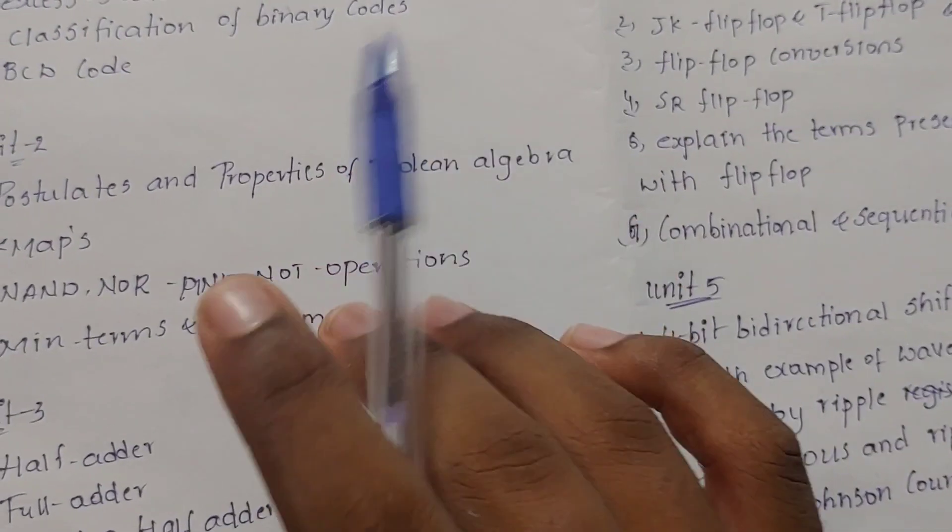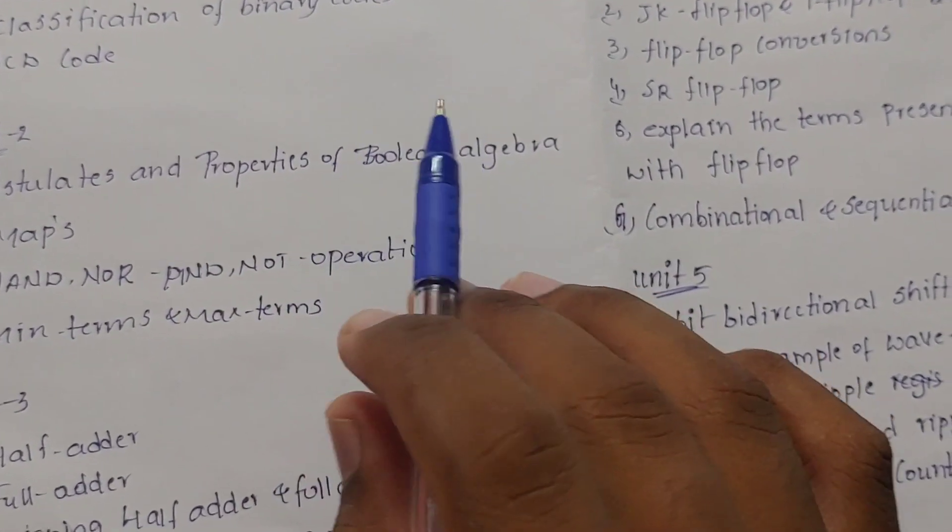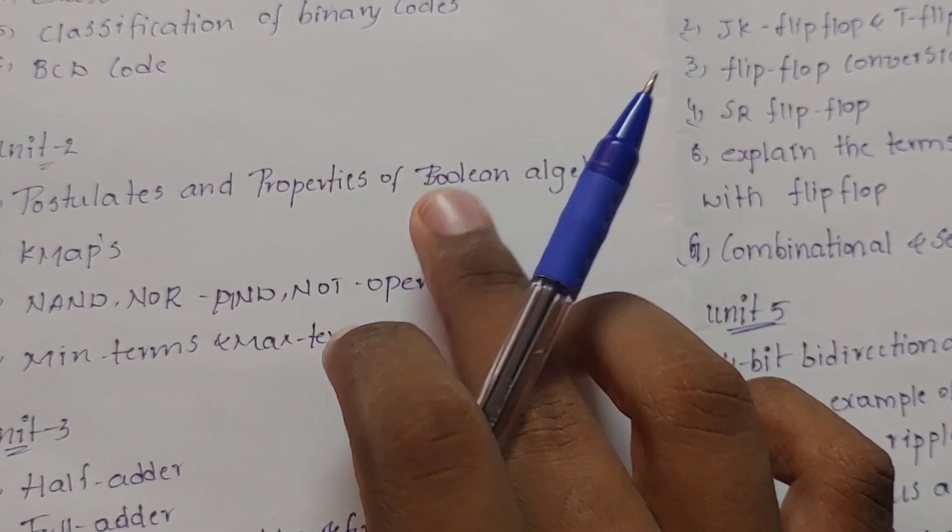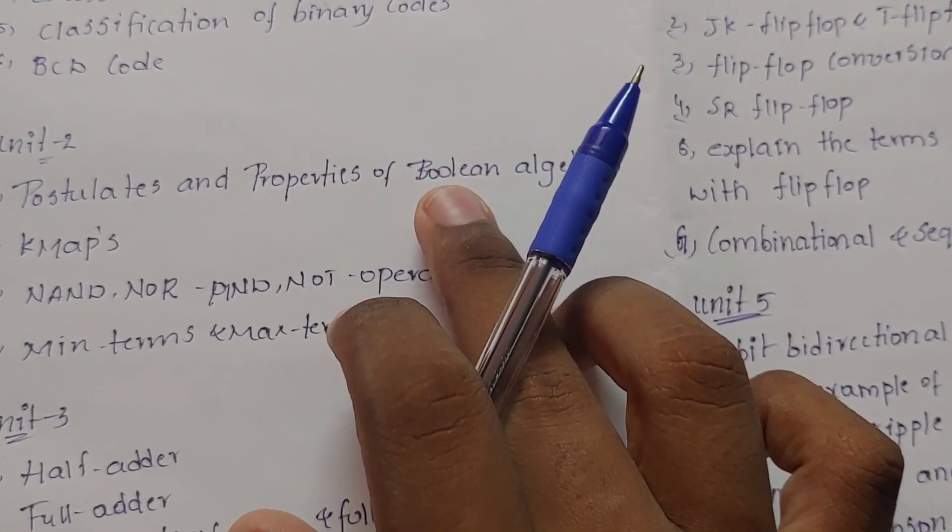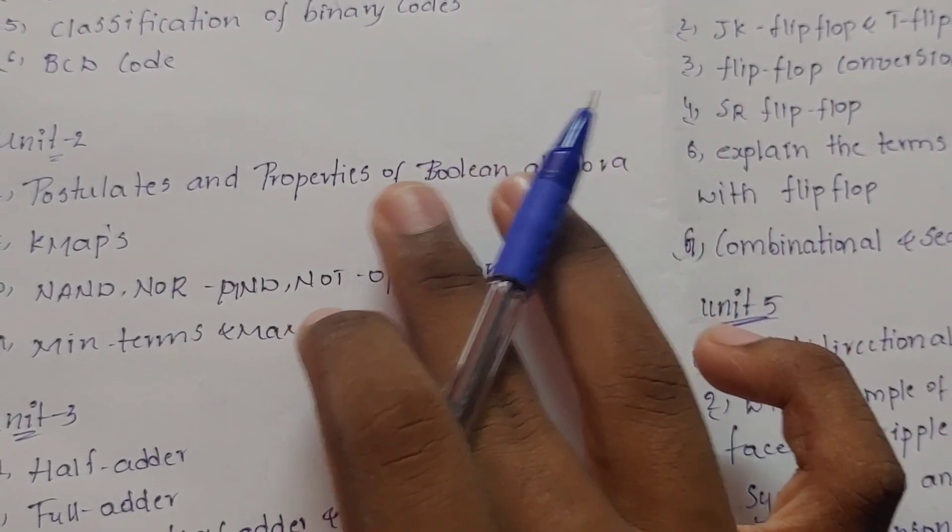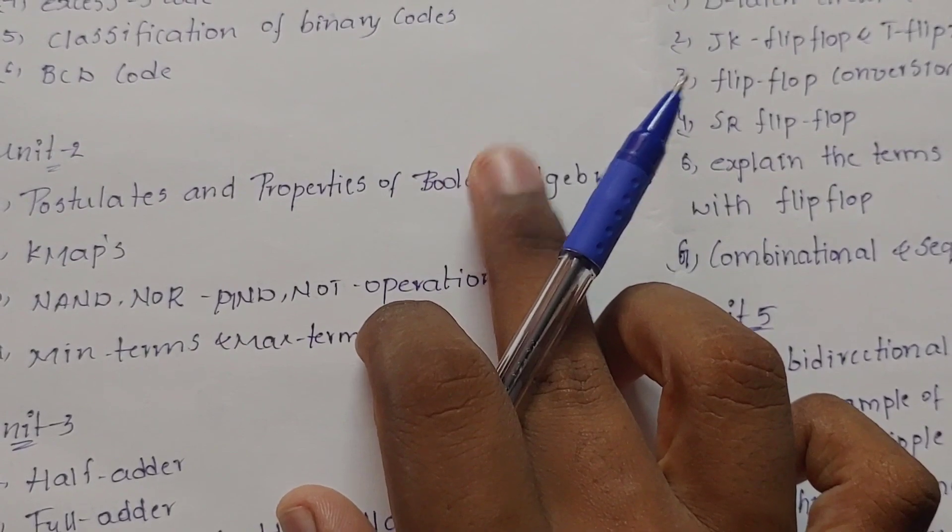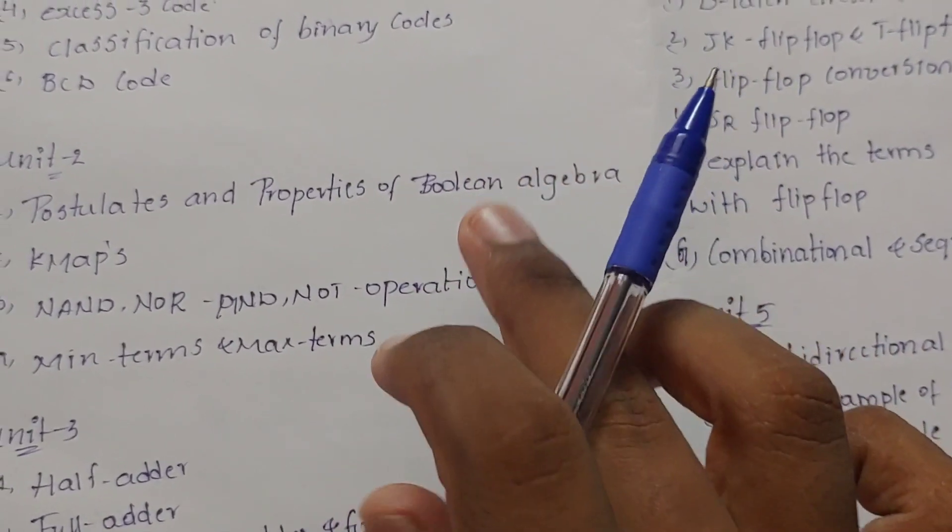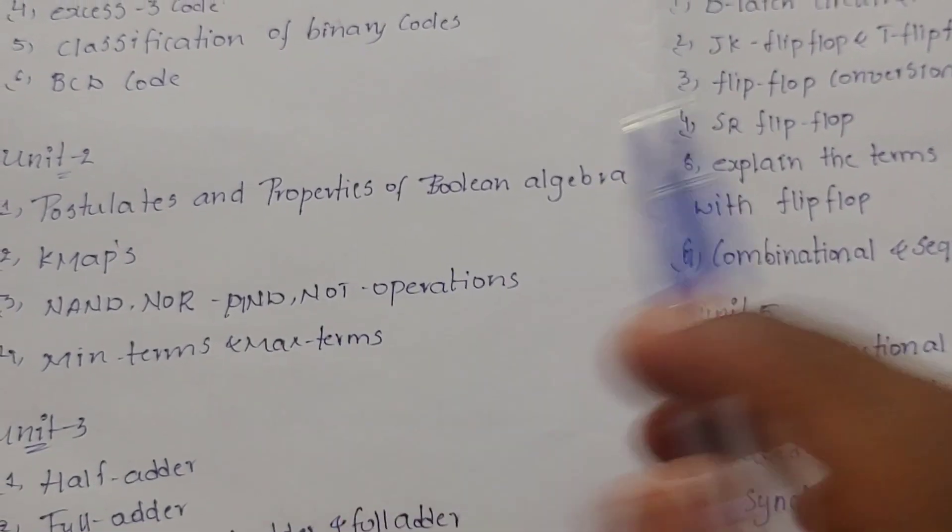Coming to unit 2, postulates and properties of Boolean algebra. Last time R19 was present 2 to 9, so in this case 1, 2, 3, 4 sets are common. The min terms are the same.